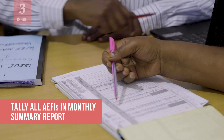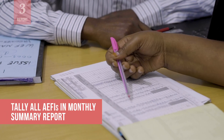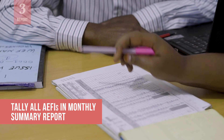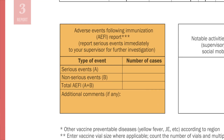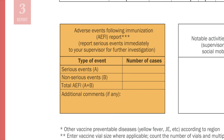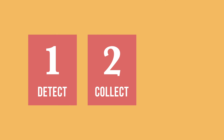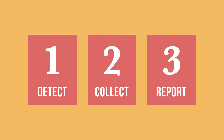At the end of the month, tally all AEFIs in your monthly summary report. This report includes a section for the total number of serious and non-serious events during the month. National authorities should provide guidance on which events should be included in each category. By detecting, collecting information about, and reporting AEFIs, you can do your part to prevent future problems and maintain the trust of the communities where you work.